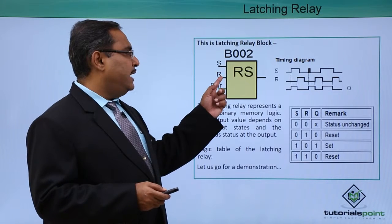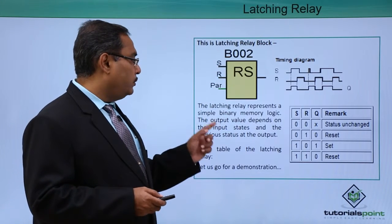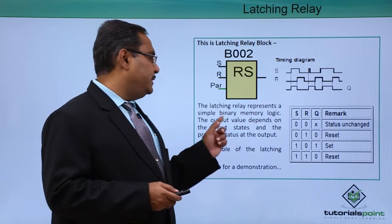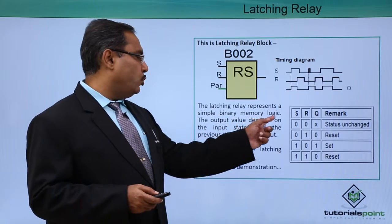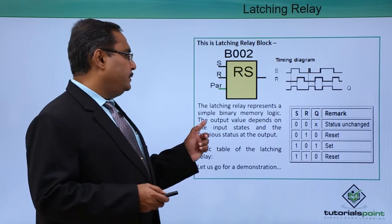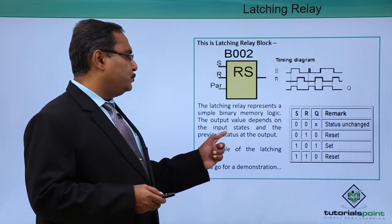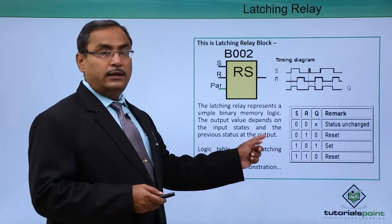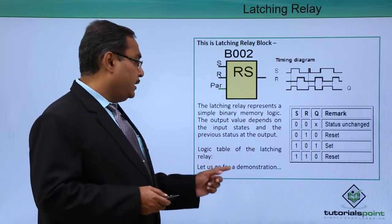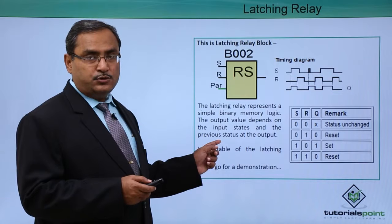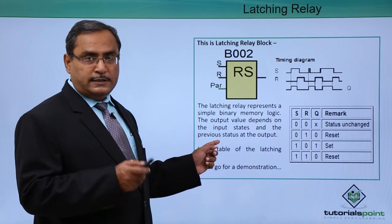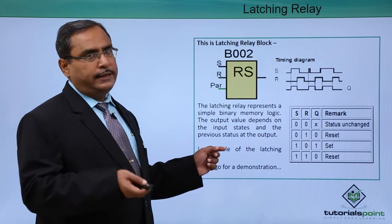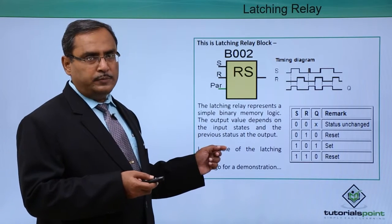Here S is set and R is reset. The latching relay represents a simple binary memory logic. The output value depends on the input states and the previous status at the output, because it is a sequential circuit. That is why the present input and the previous output will decide the next output of the circuit.